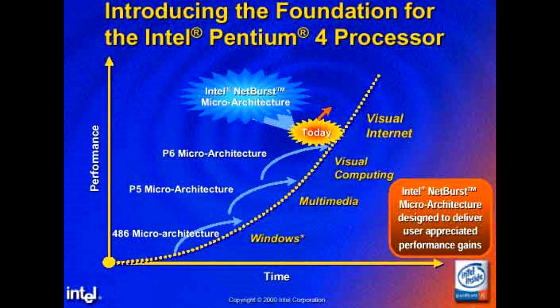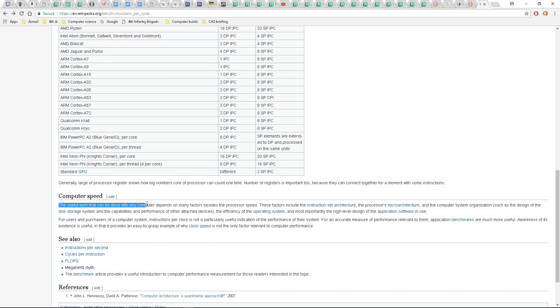But the Pentium 4 came out with a netburst architecture, and this had a war to win. Which meant higher frequencies were the name of the game, and at that time enthusiasts were less aware of things like IPC. Anyway, this all came at a cost of low IPC and high instruction latency.